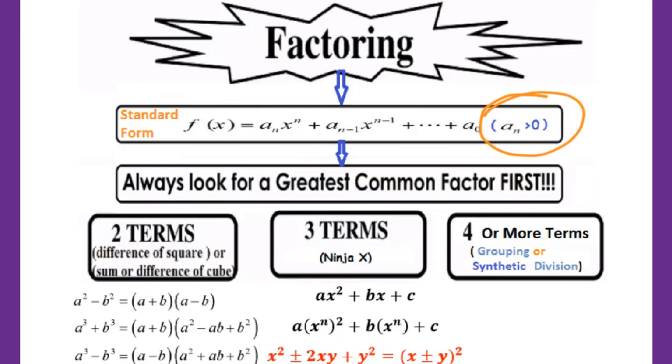If it's not positive, we have to take the negative sign outside. Then, after you set up the polynomial in standard form, the first step is always GCF first, which means you have to look for a greatest common factor first. After that, just check how many terms your polynomial has.